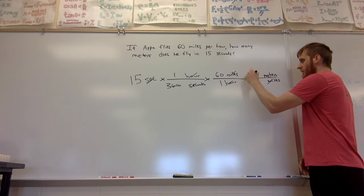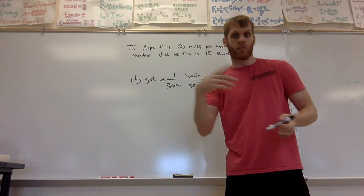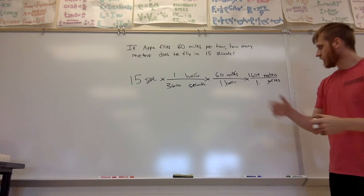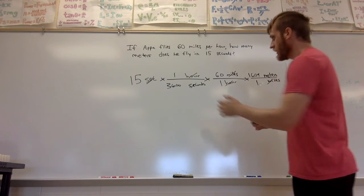One mile is 1609 meters. Those who run track know 1600 meters is about a mile. It's actually 1609 point something. Now I know everything cancels out.